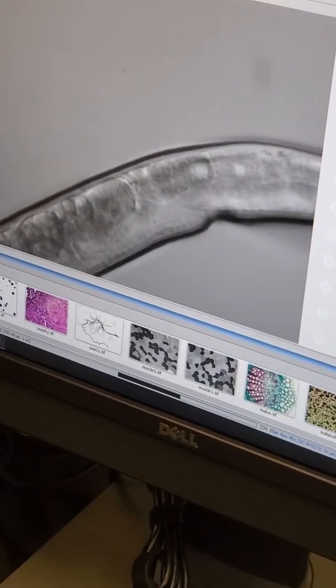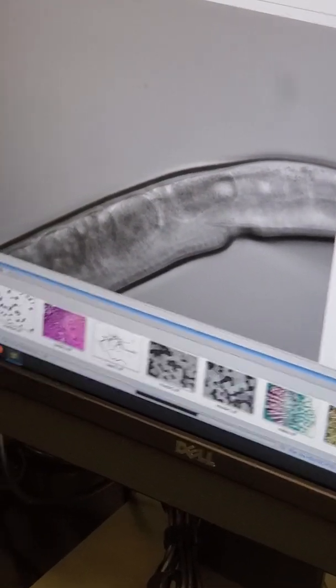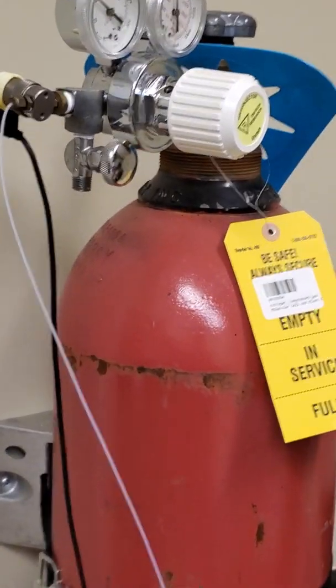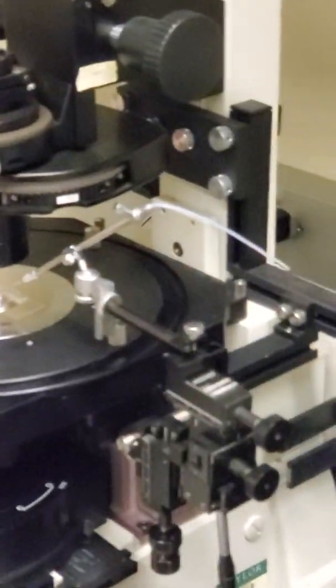So the way that we are injecting the liquid is through our foot pedal here on the table. You can see Josh's foot on it right there. And so that is connected to our nitrogen air tank. And so that pushes air through our tubing, which connects to the back of our needle. And the air then pushes the liquid into the worm.